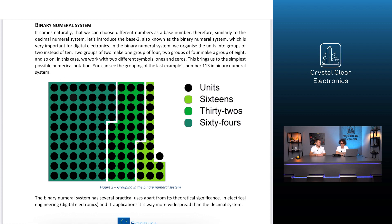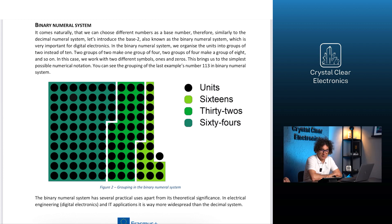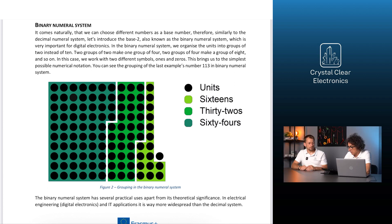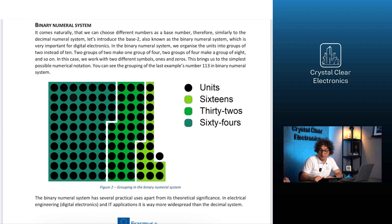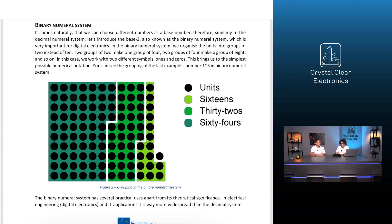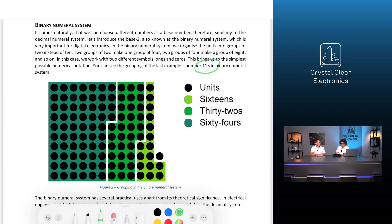In the binary numeral system, we organize the units into groups of 2 instead of 10. Two groups of 2 make one group of 4, two groups of 4 make a group of 8, and so on. In this case, we work with two different symbols, 1s and 0s. This brings us to the simplest possible numerical notation. You can see the grouping of the last example's number 113 in binary numeral system.